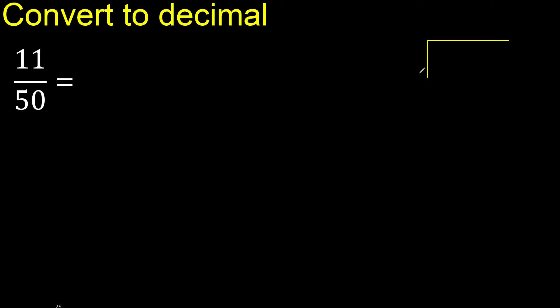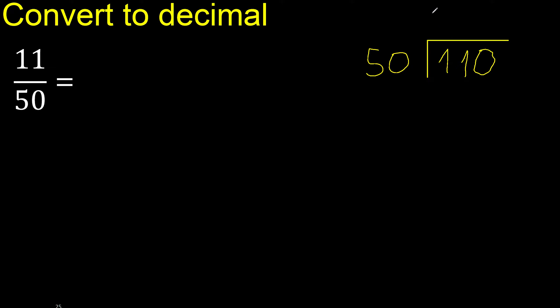11 divided by 50. 11 is less, therefore complete — always complete with 0. Here: 0 point.